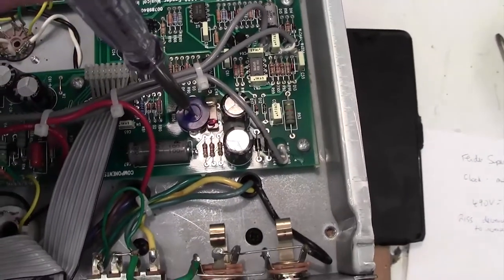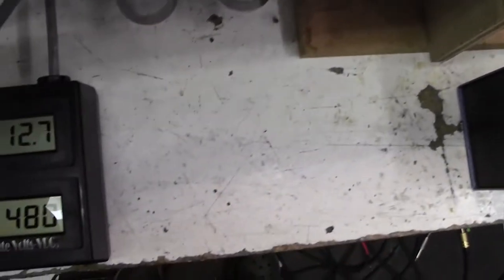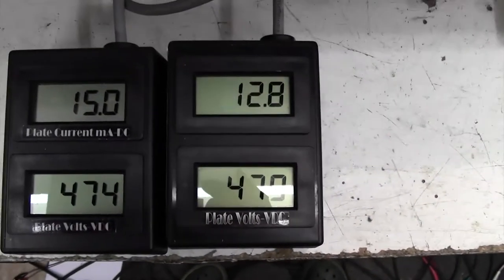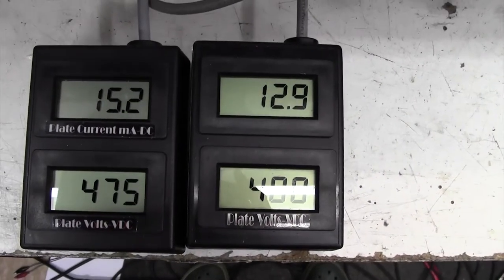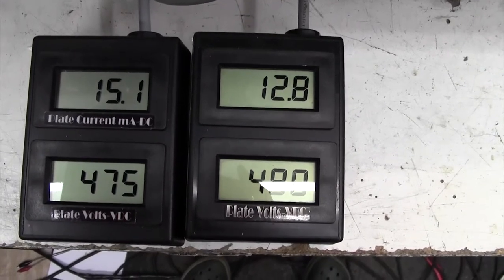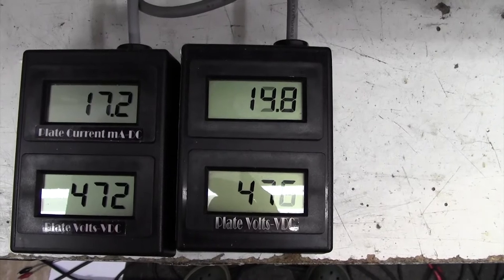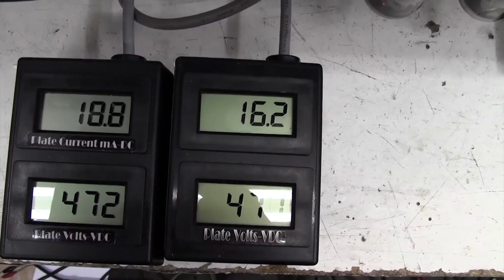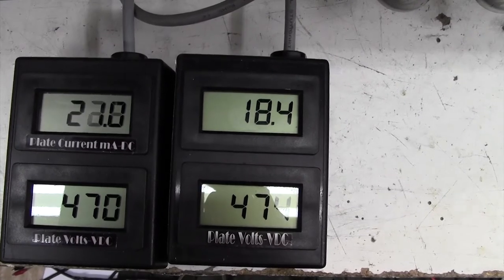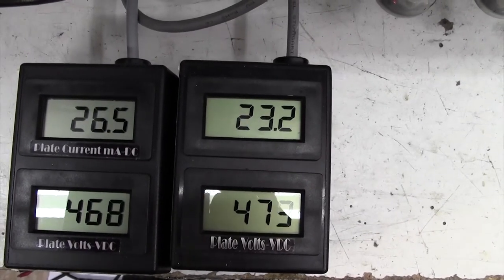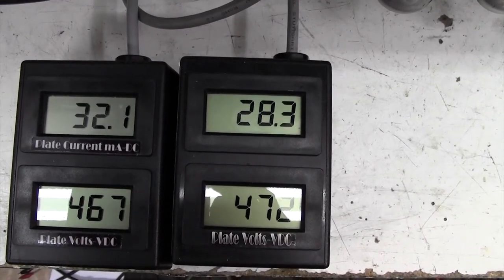So increasing or turning clockwise the pot increases the current, and turning it anti-clockwise decreases it. So I'm going to turn this clockwise as we watch the bias meters. So it's the top meter to watch. In this case I'm turning up the blue pot now, and you can see the bias is increasing.